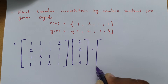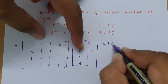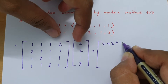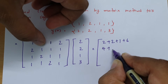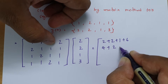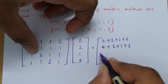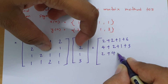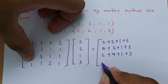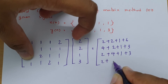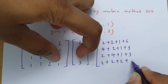Solving the matrix multiplication: first row is 1 times 2 is 2, plus 1 times 2 is 2, plus 1 times 1 is 1, plus 2 times 3 is 6. Second row: 2 times 2 is 4, plus 1 times 2 is 2, plus 1 times 1 is 1, plus 1 times 3 is 3. Third row: 1 times 2 is 2, plus 2 times 2 is 4, plus 1 times 1 is 1, plus 1 times 3 is 3. Fourth row: 1 times 2 is 2, plus 1 times 2 is 2, plus 2 times 1 is 2, plus 1 times 3 is 3.